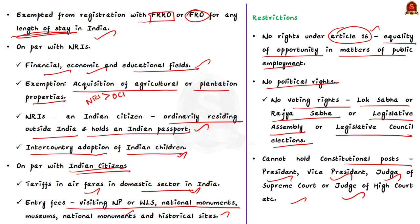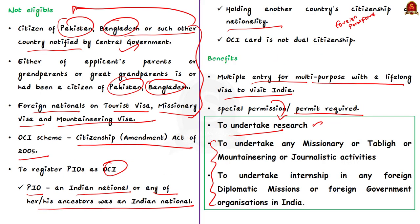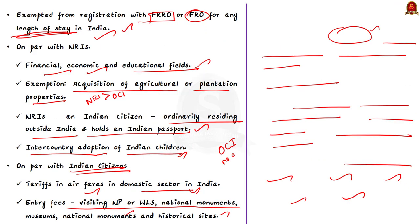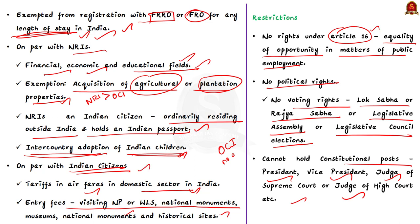Quick recap on OCI: we saw who is considered an Overseas Citizen of India and who is not eligible for an OCI card. Benefits include multiple entry lifelong visa; exemption from registration with FRRO for any length of stay; on-par treatment with NRIs in financial, economic, and educational fields (except acquisition of agricultural or plantation properties); on-par treatment with NRIs for inter-country adoption; and on-par treatment with Indian citizens for domestic airfares and entry fees at national monuments, parks, etc. OCI cannot claim rights under Article 16, has no political rights, and cannot hold constitutional posts.